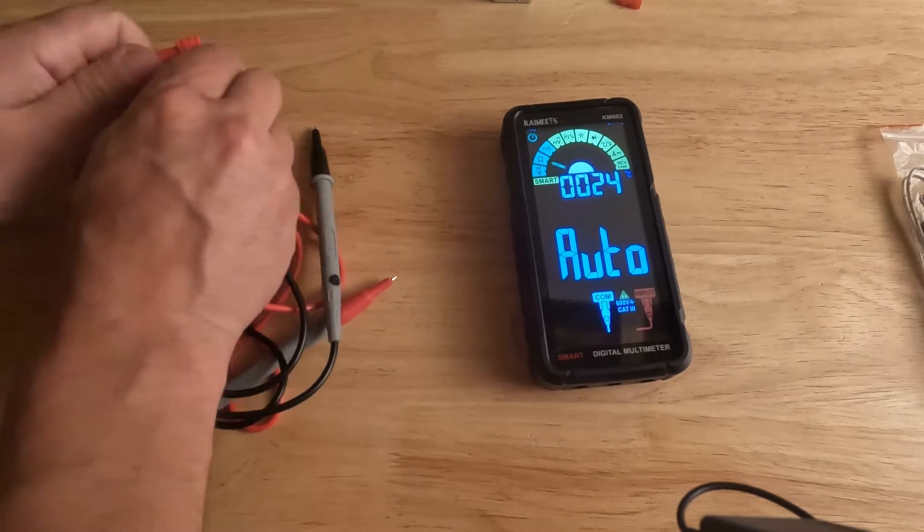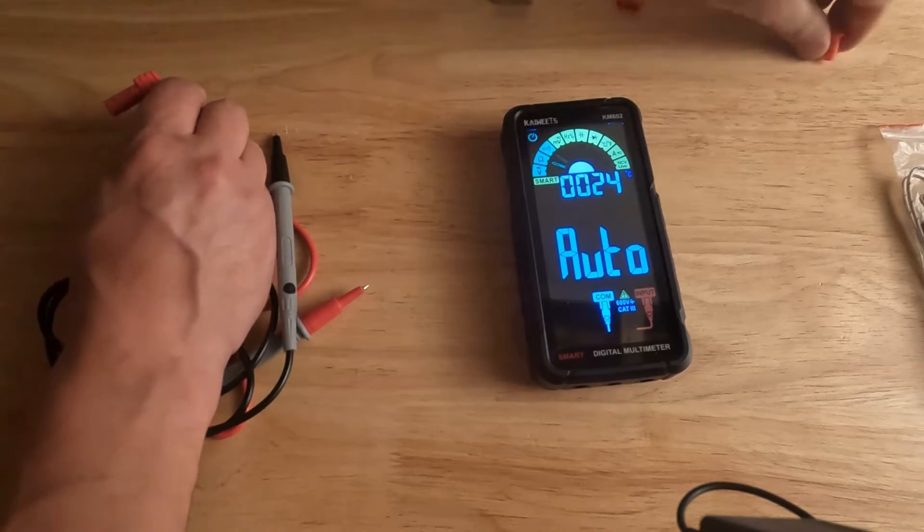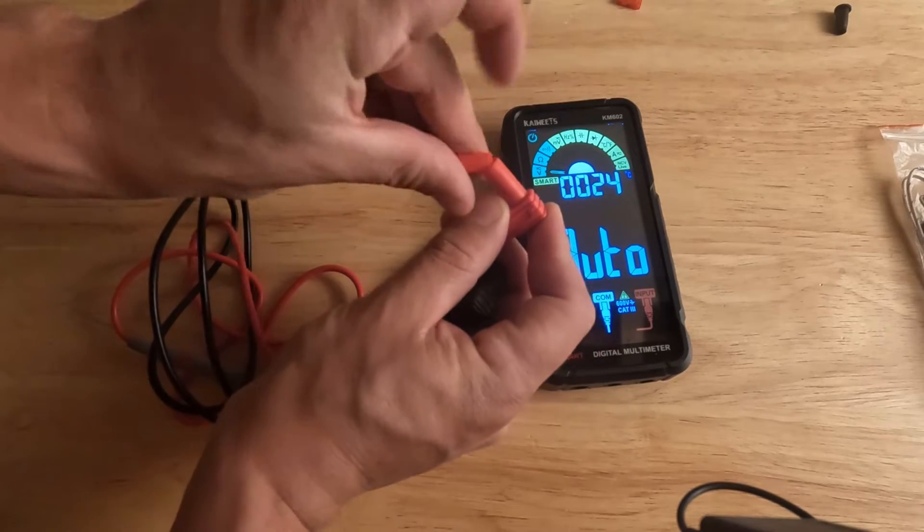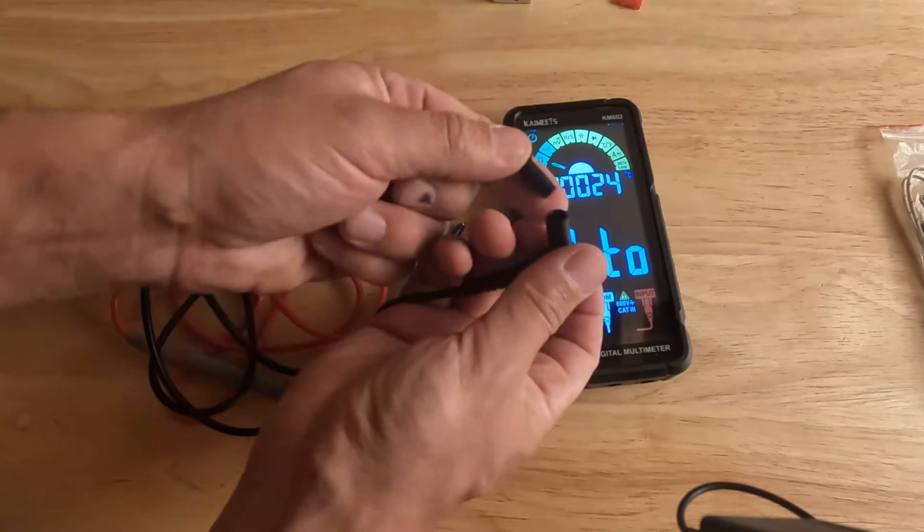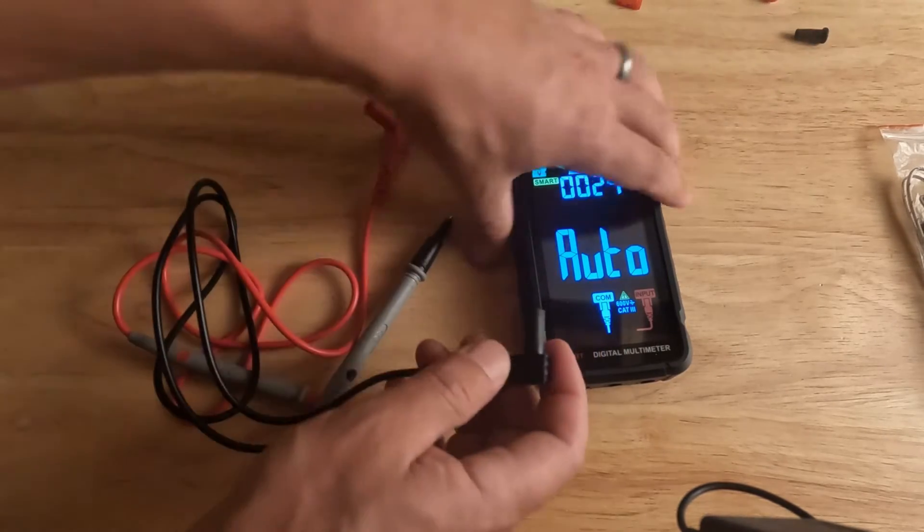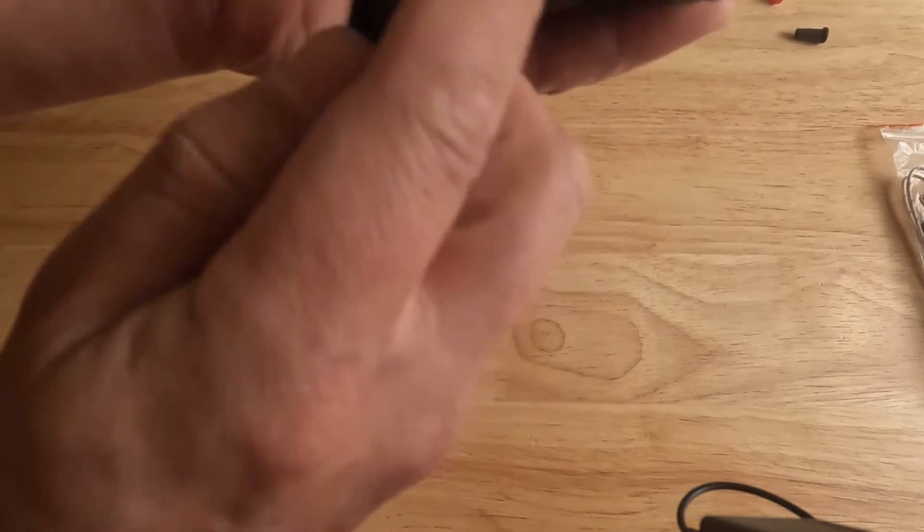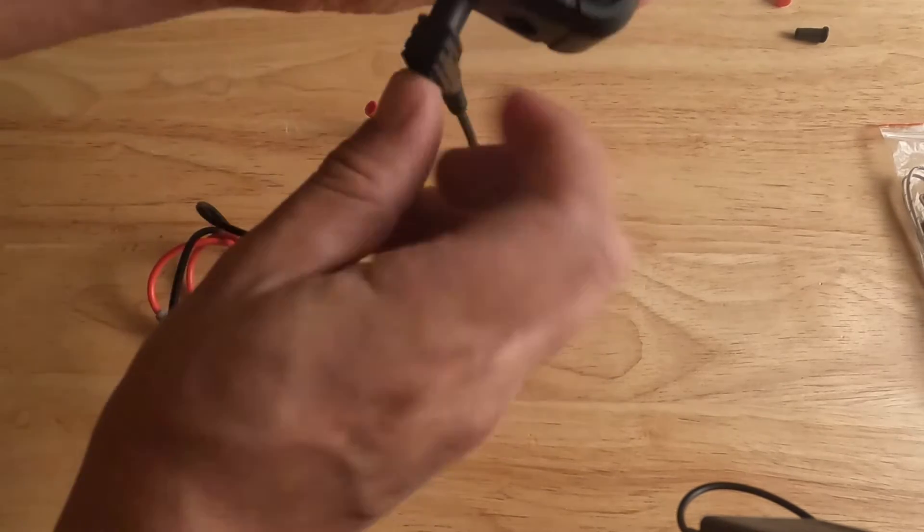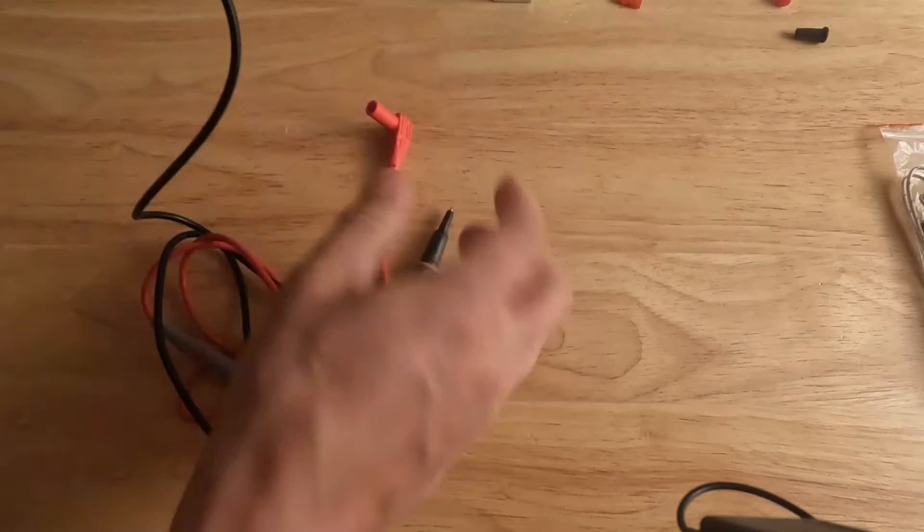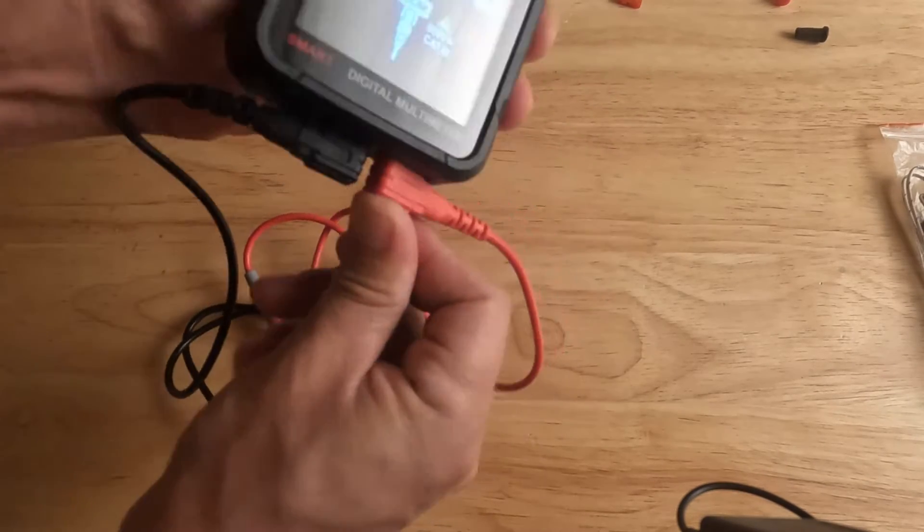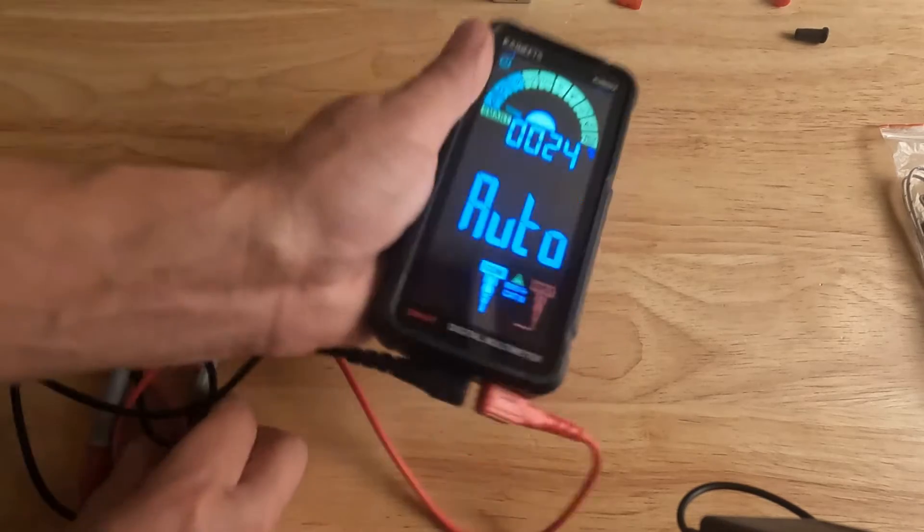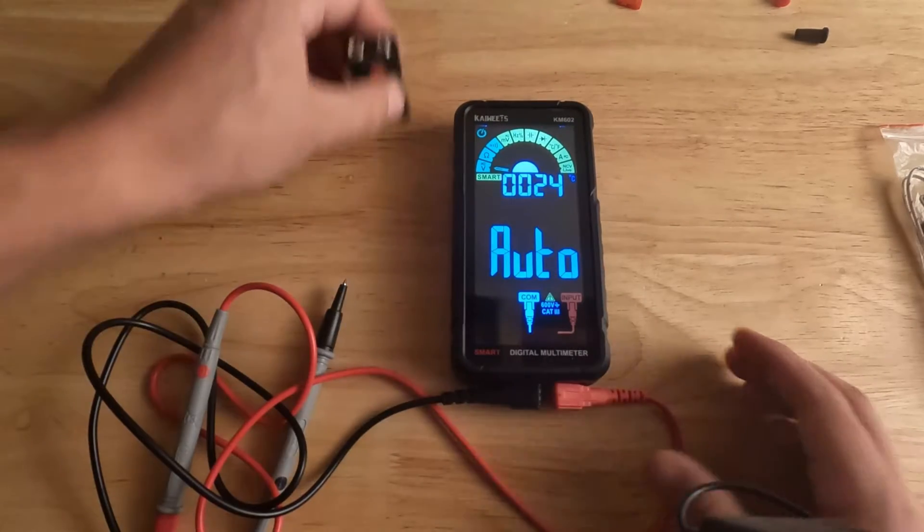You pretty much just take out these little pieces right here. Take that one out and then take the black one out. We're going to plug the black probe into this middle port like it says, into the COM. We're going to plug the red into the input like that. Now I'm going to show you how this works.